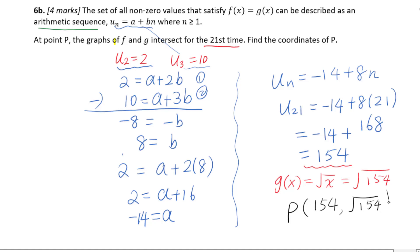To simplify √154, we check if 154 is divisible by any perfect square such as 4, 9, 25, or 49 — it is not, so √154 cannot be simplified further.